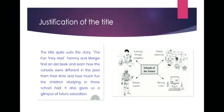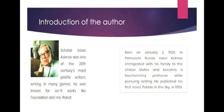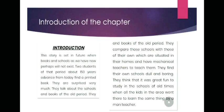Let's recap what we've studied. The book is English Beehive, the chapter name is 'The Fun They Had,' written by Isaac Asimov. We've seen the author introduction — he was a very prolific writer of the 20th century, born on 2nd January 1920 in Petrovichi, Russia. He immigrated to the United States and became a biochemistry professor while continuing his writing. He published his first novel, Pebble in the Sky, in 1950. The story is set about 150 years in the future, in an era with no printed books and highly computerized schools.